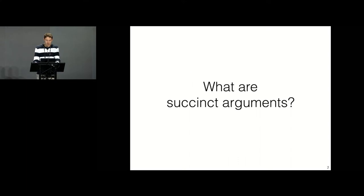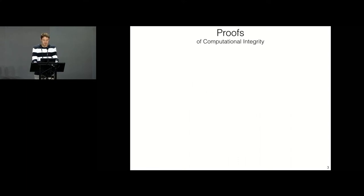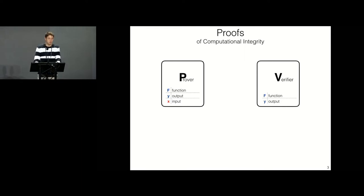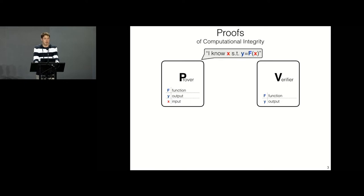Let me tell you what succinct arguments are. First, I need to tell you about proofs of computational integrity. In a proof, you have two parties called a prover and a verifier. The prover knows a function, an output, and an input. The verifier knows just the function and the output. The prover would like to convince the verifier that he knows an input x that makes the function f output y.